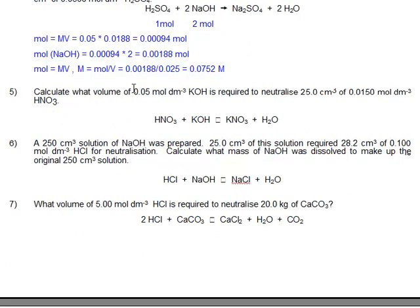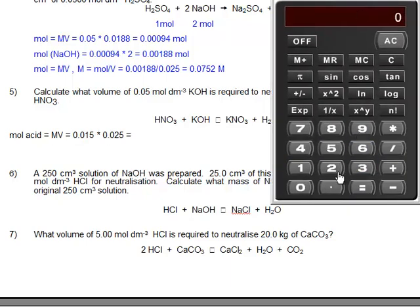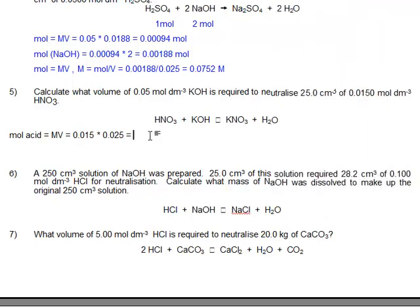Question 5. Calculate what volume of 0.05 mol dm⁻³ KOH is required to neutralize 25.0 cm³ of 0.0150 mol dm⁻³ HNO₃. So we can work out the amount of nitric acid we have first. Moles of acid equals molarity times volume, MV. Let's keep reinforcing this. Molarity is 0.015. The volume, 25 cm³, 0.025. We'll bring a calculator in. 0.015 times 0.025, and that becomes 0.000375.